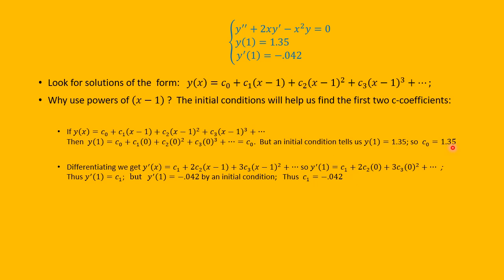Similarly, if we differentiate the series term by term, y'(x) = c₁ + 2c₂(x−1) + 3c₃(x−1)² + ..., and plug in x = 1, all terms after the first vanish, giving y'(1) = c₁. Since y'(1) = -0.042, we immediately get c₁ = -0.042.